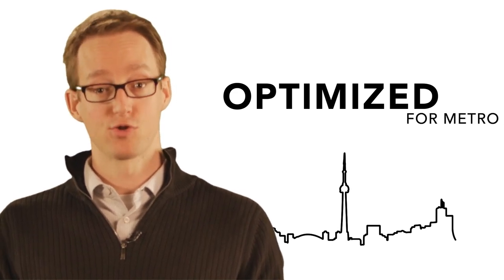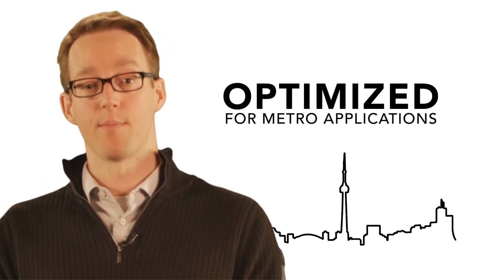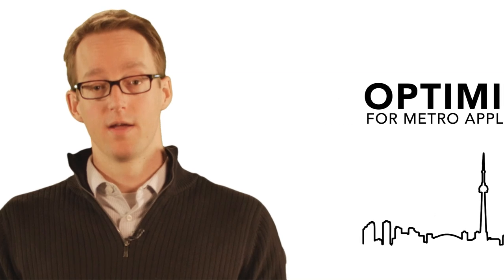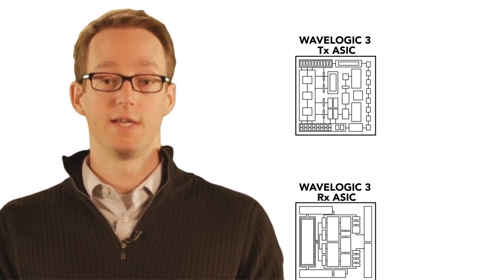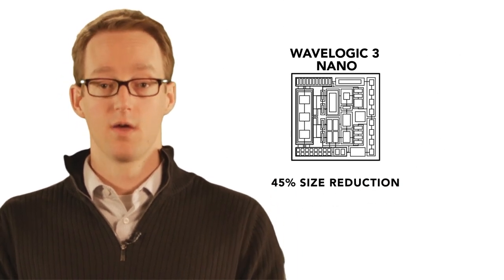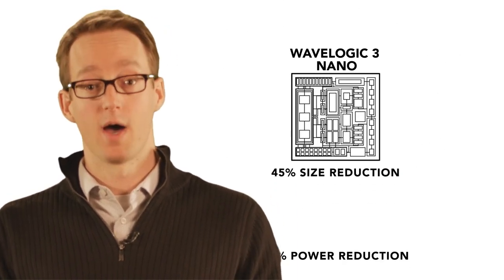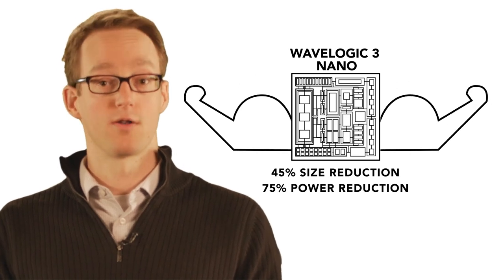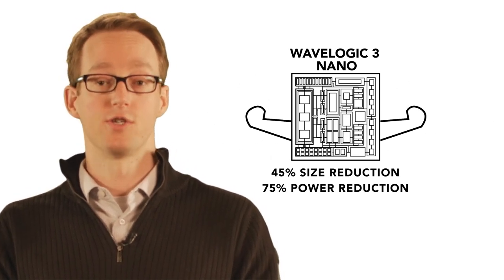There are several changes we made to optimize WaveLogic 3 Nano for metro higher density applications. On the integrated circuit side, we took WaveLogic 3's transmitter and receiver DSP functions and combined them together into a single ASIC. This was enabled by the latest CMOS processing technology node for ASIC integration.